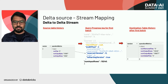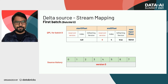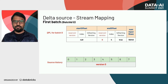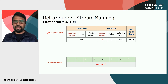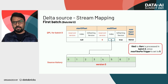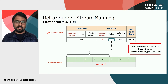Let me represent this more graphically. For batch ID zero, we have start offset null and end offset with reservoir version zero and index four. The source table history shows version zero with files indexed zero through seven. In the first batch, we ingested files zero through four — that's five files — because maxFilesPerTrigger is set to five. Index four represents the fifth file in version zero of your source data table.